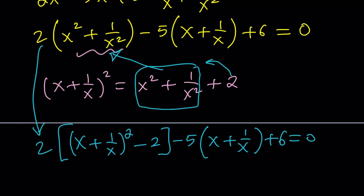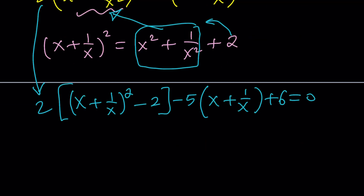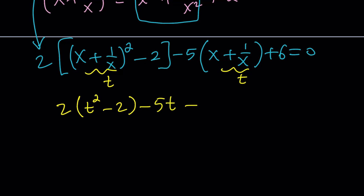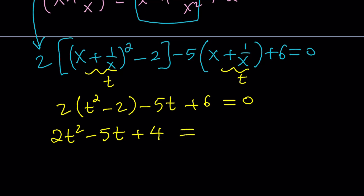This is calling for substitution — let's call t equal to x plus 1 over x. Now we get 2 times t squared minus 2, minus 5t plus 6 equals 0, which gives 2t squared minus 5t plus 4 equals 0.